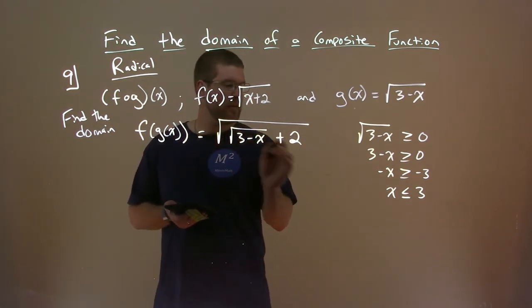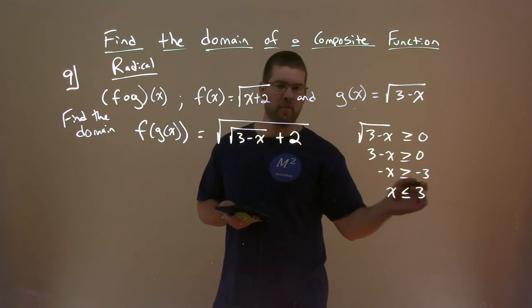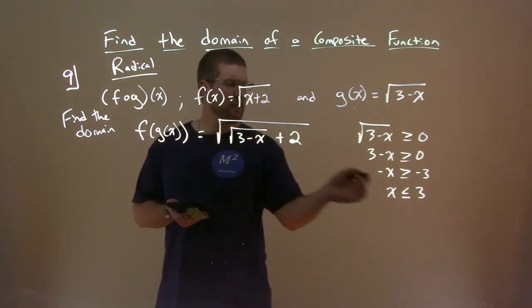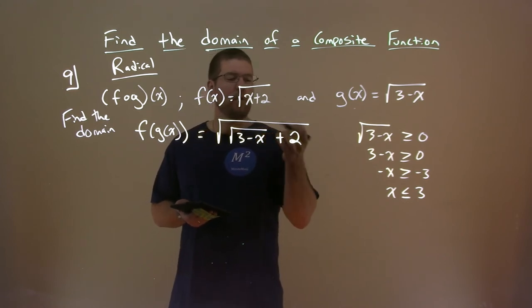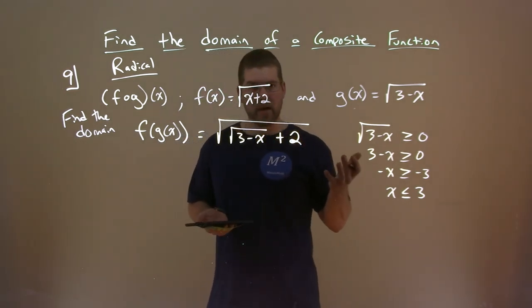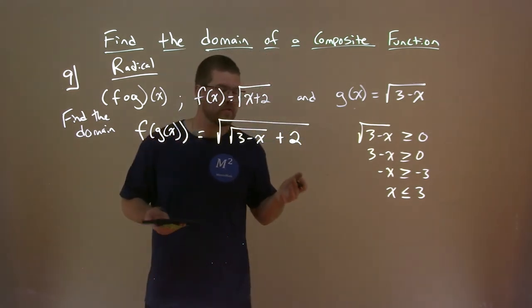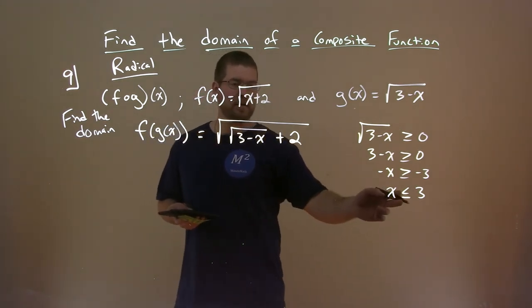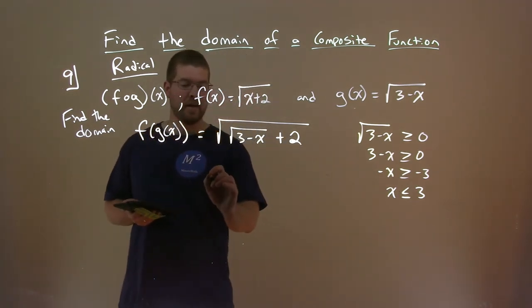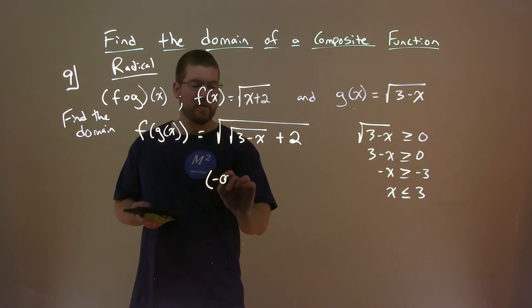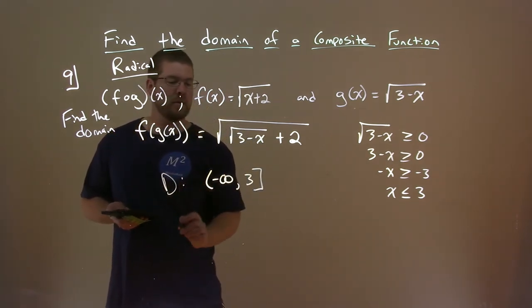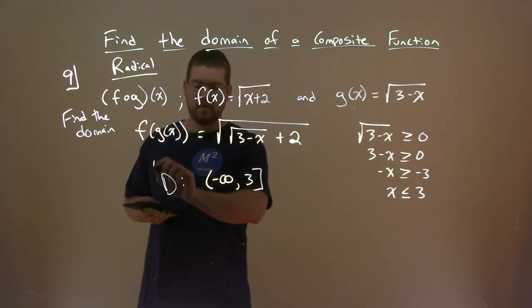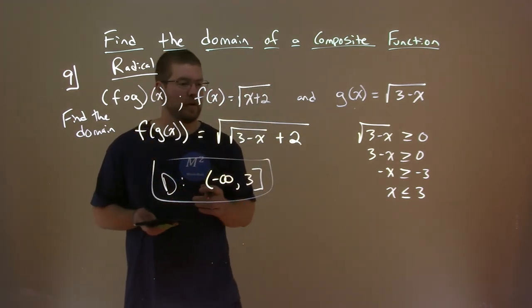But if we know that everything from this restricted domain right here we kind of found, everything there is going to be either 0 or a positive number when it's all said and done. When we add a 2 to that, it's always just going to be positive. So our only restricted domain here is what we first found. That x can be from negative infinity to positive 3 including 3 and that will work there.